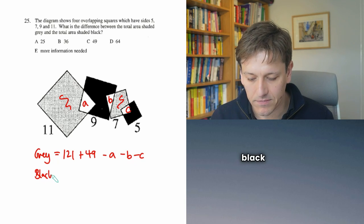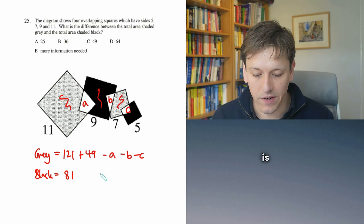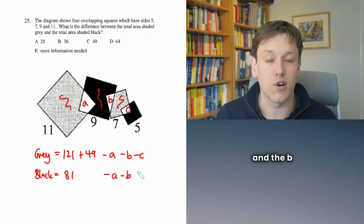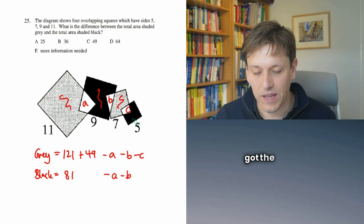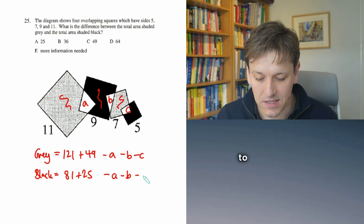Now for the black area, we would have the black square here is 9 squared is 81. And that one has the A and the B subtracted from it. And then I've got the black square here of 5 squared, so that would be plus 25. And I'd want to subtract the C from that one.